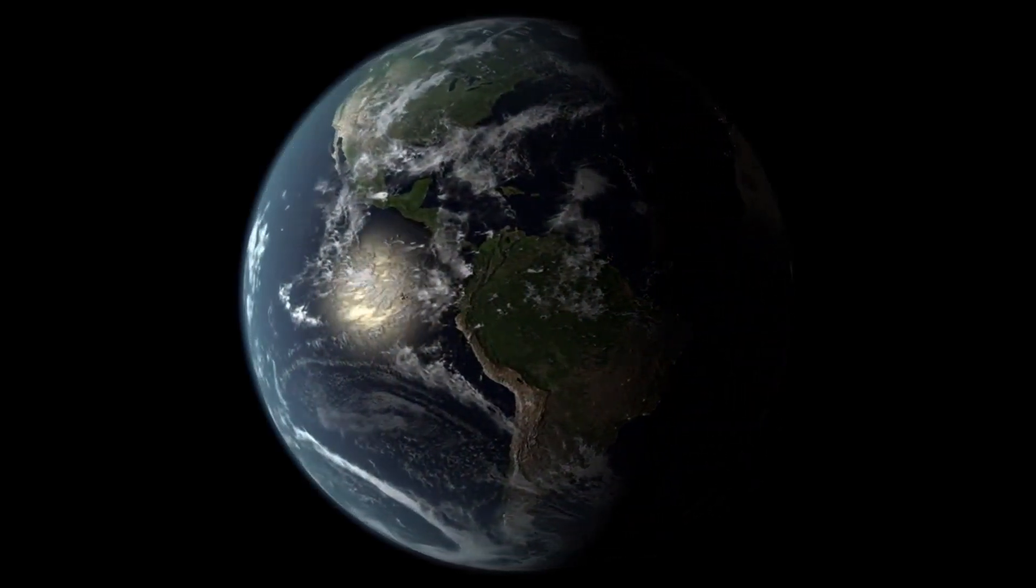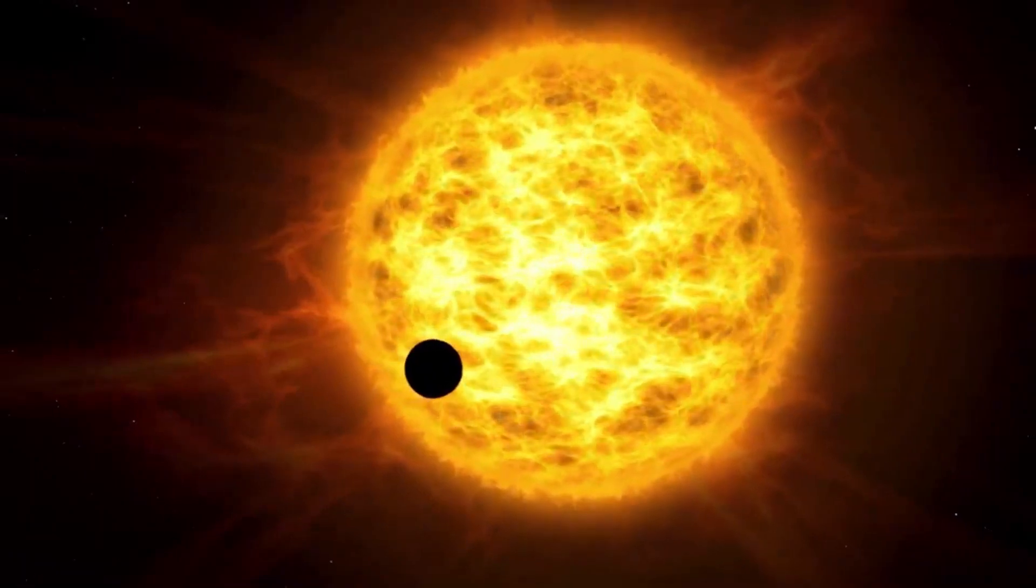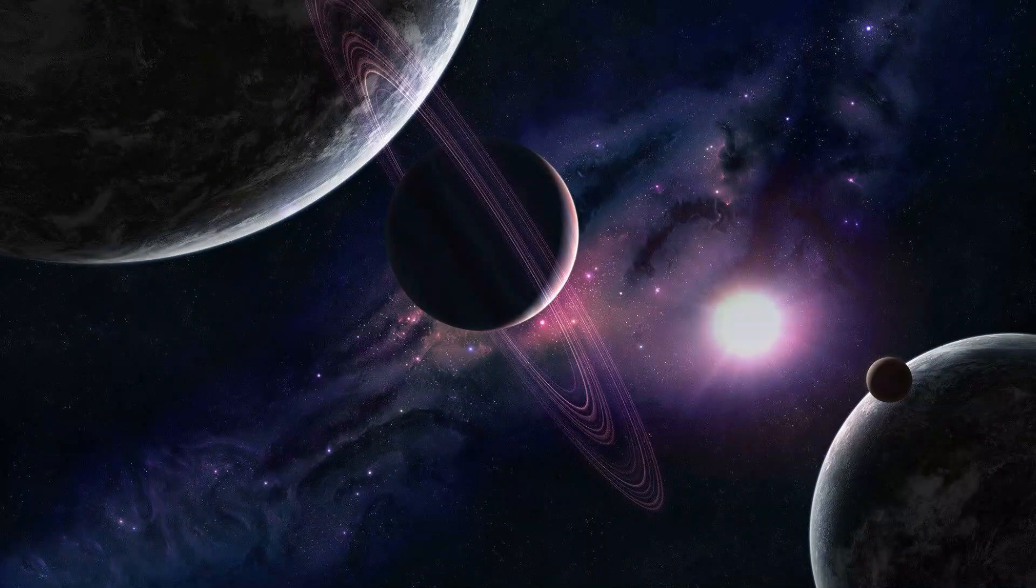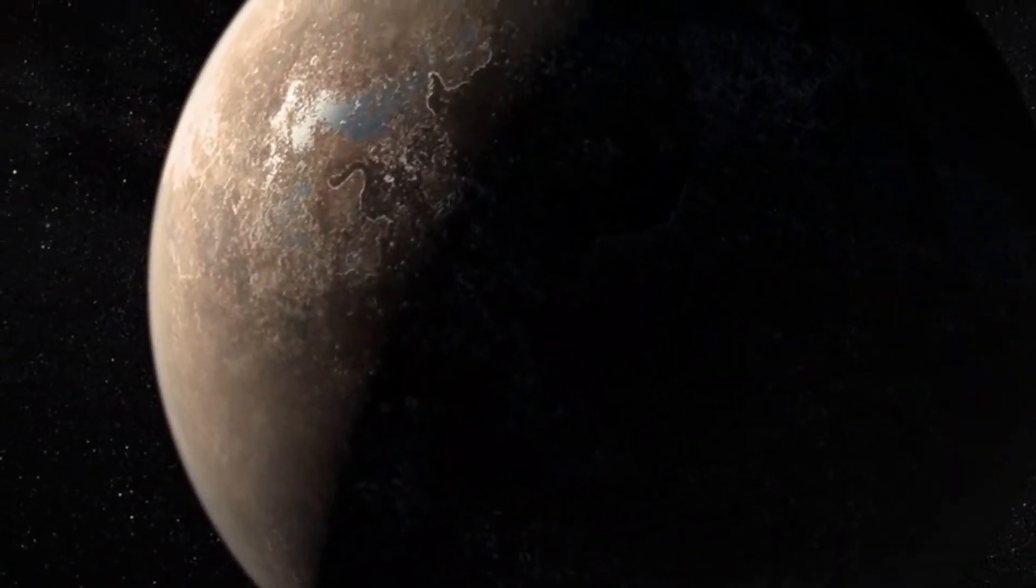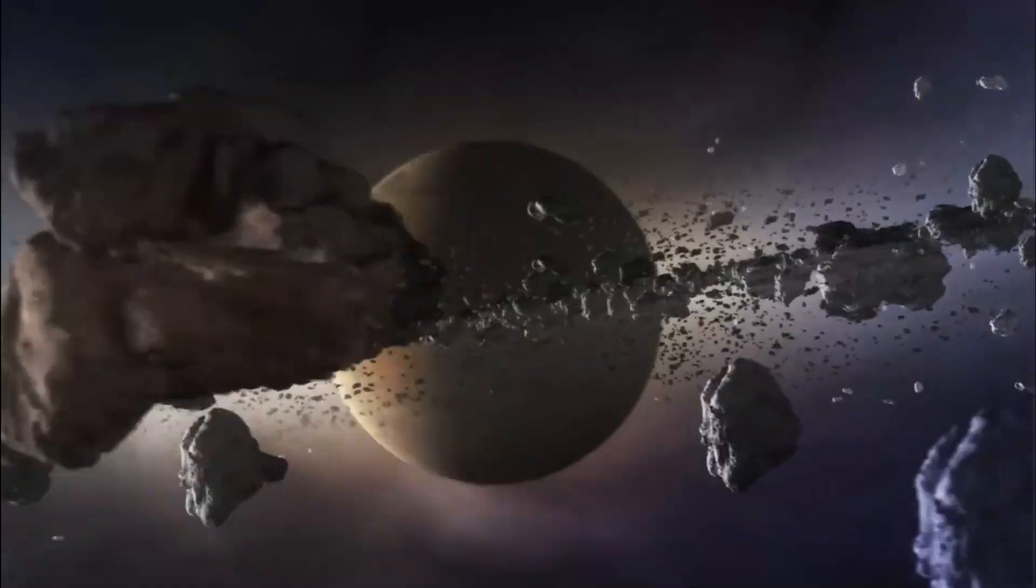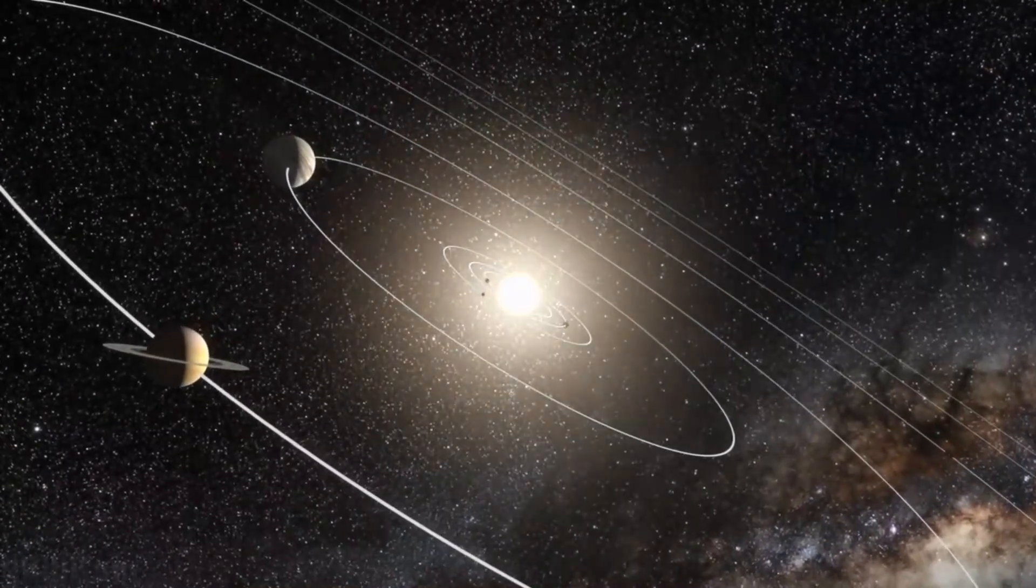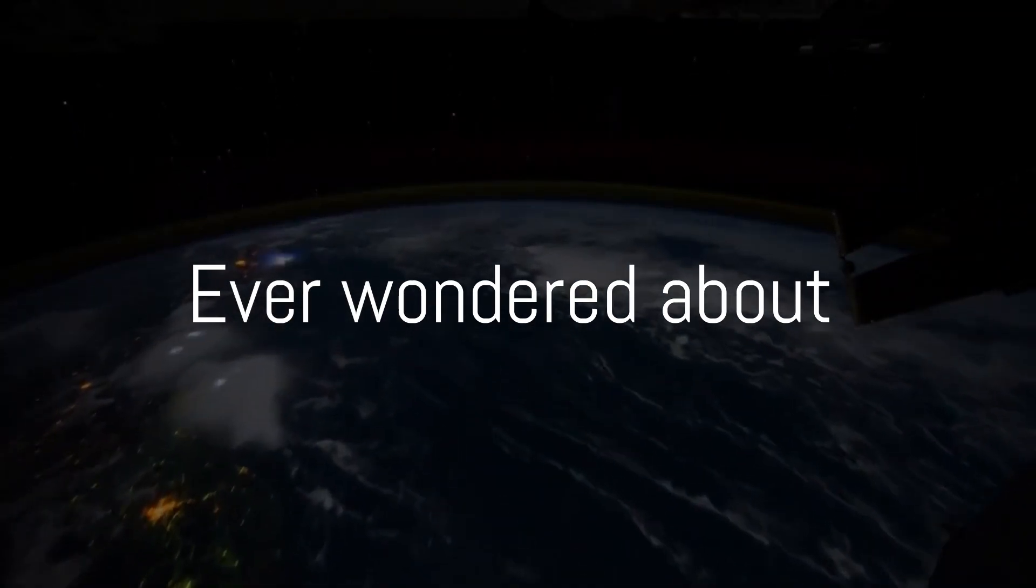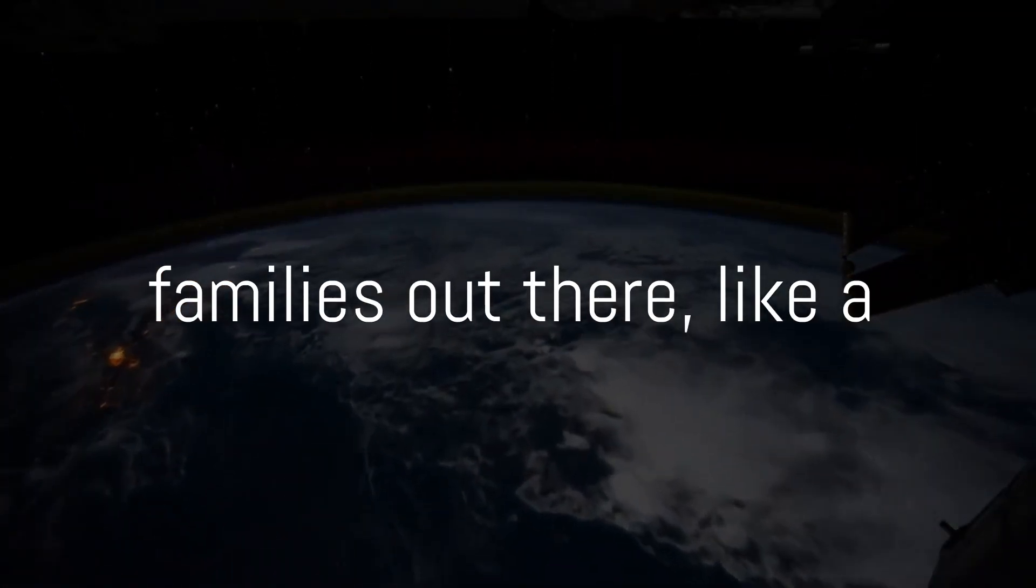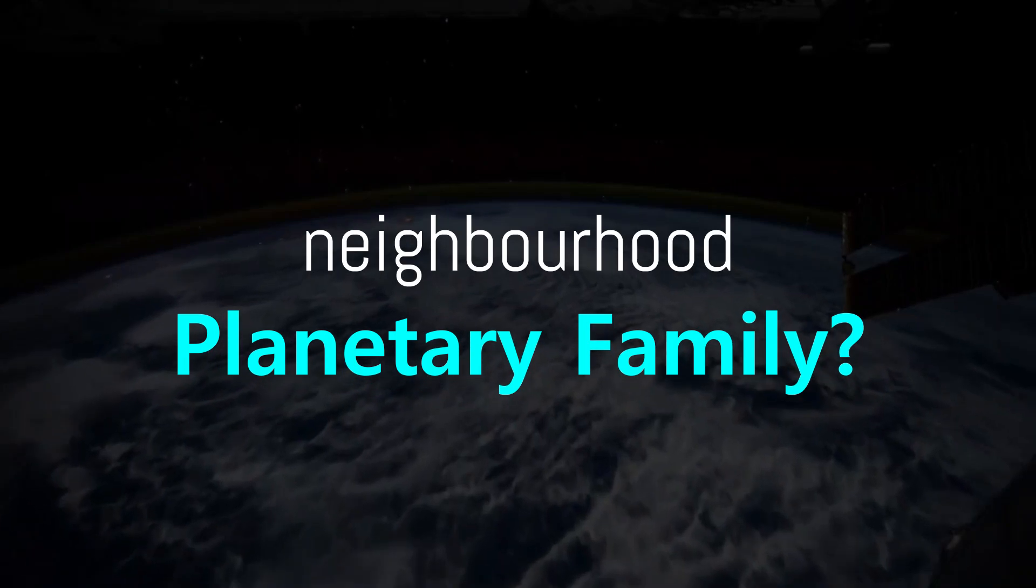Our planet Earth revolves around the sun while maintaining the interplanetary relationship with its giant family, the solar system. Every planet and its moon, any asteroid and comet that orbit our sun comes in this family. But have you ever wondered about existence of other families out there, like a neighborhood planetary family?